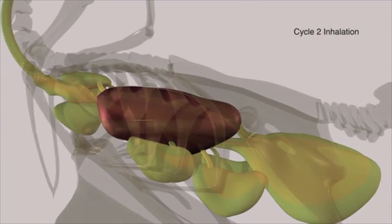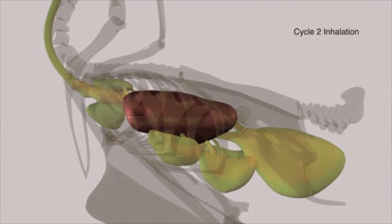As the bird inhales again, the air within the lungs is driven into the interclavicular, cervical, and anterior thoracic air sacs.